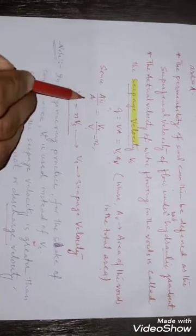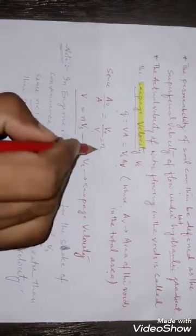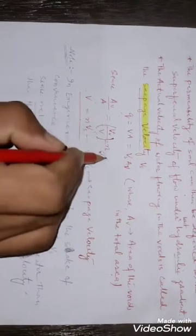Since Av is equal to A, is equal to Vv divided by V, is equal to porosity. Vv by V, volume of void divided by total volume is nothing but porosity.